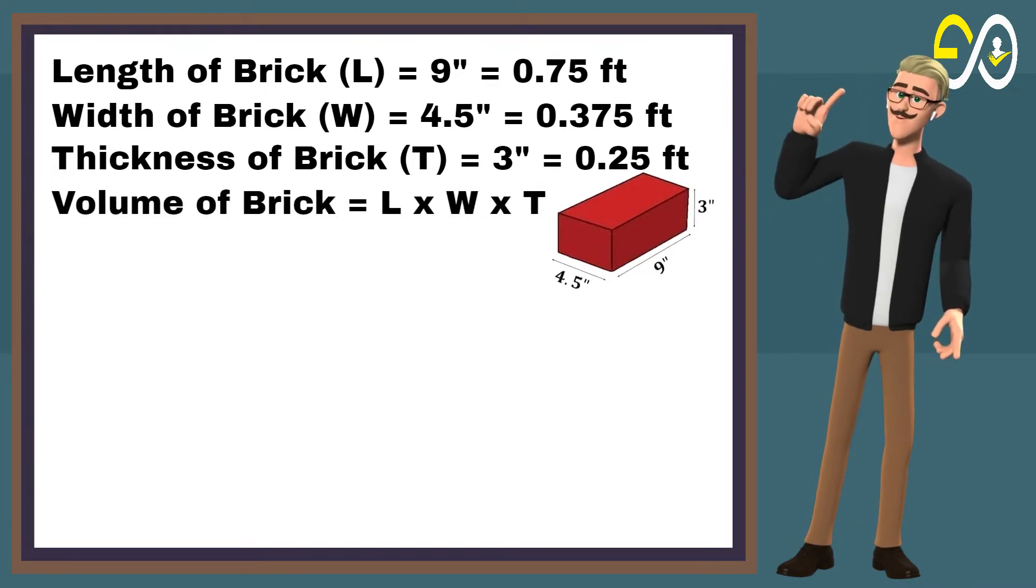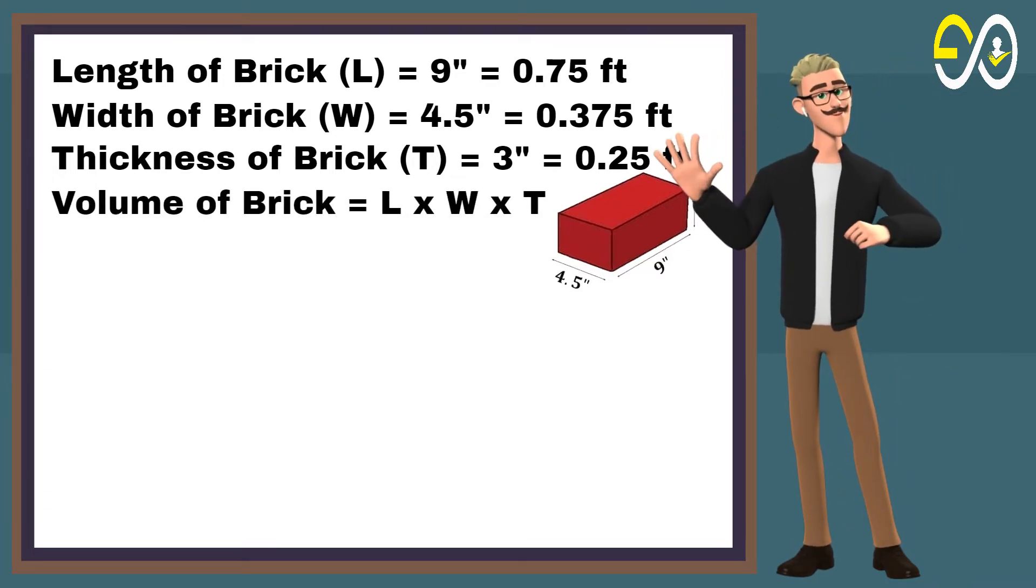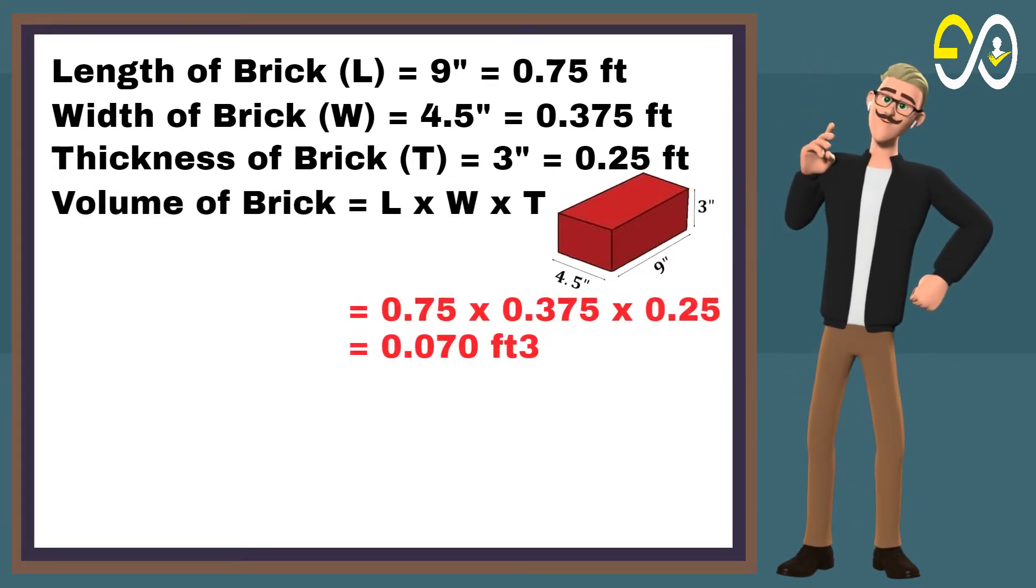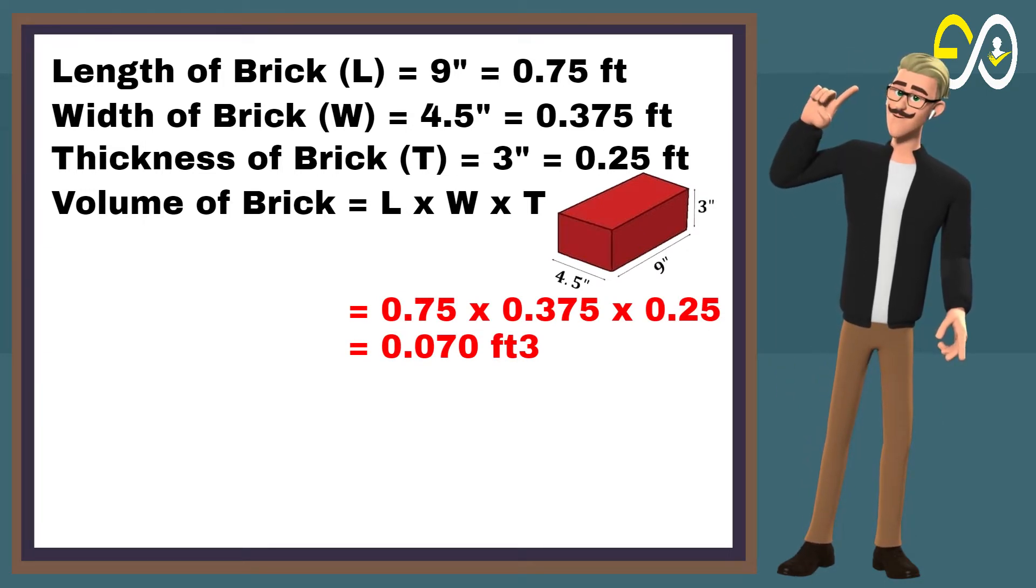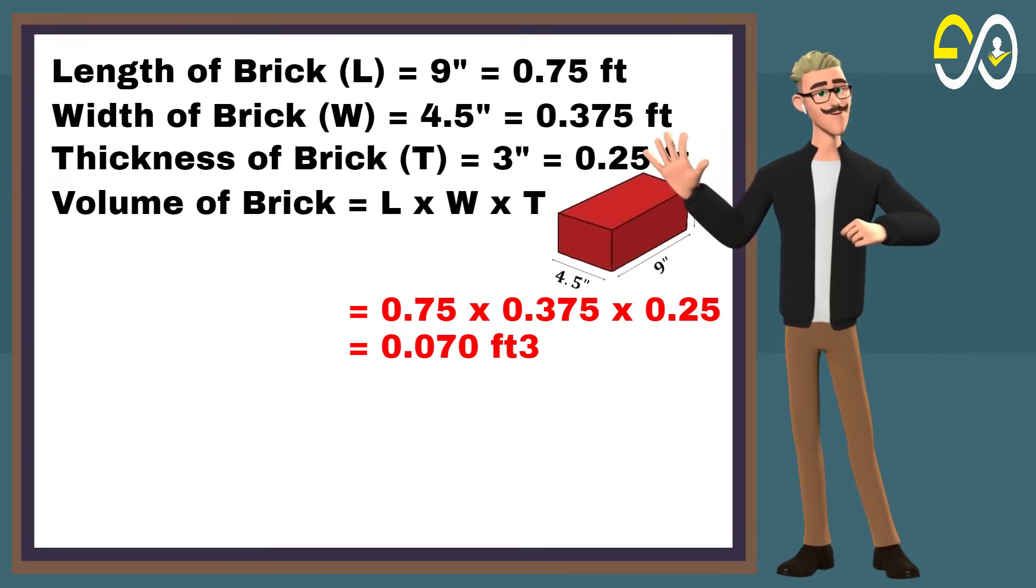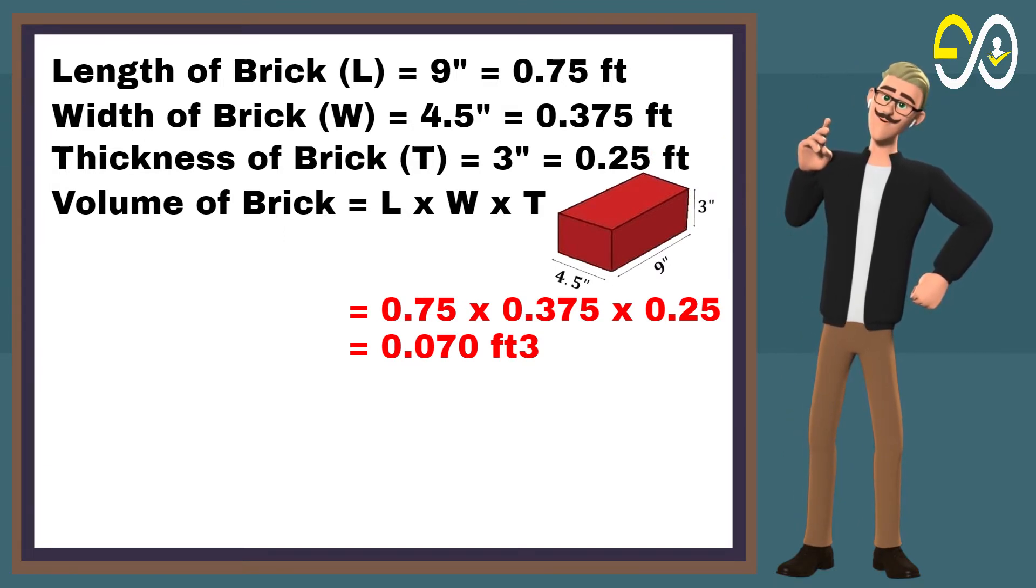Volume of brick equals length times width times thickness. 0.75 times 0.375 times 0.25 equals 0.070 cubic feet.